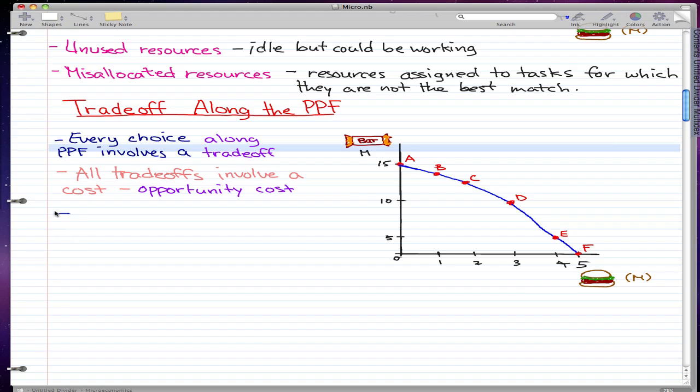Let's just note down that as we move down along the PPF, we make more burgers but we also make less bars. And the opportunity cost of a burger is the bar, and I'm sure you already know that by now because I've been saying it for so long.